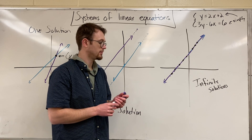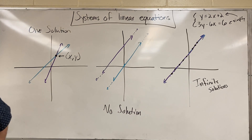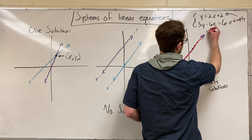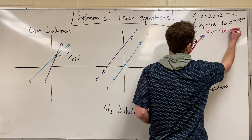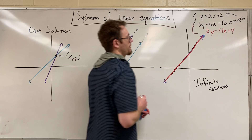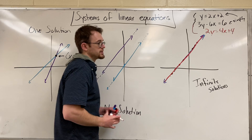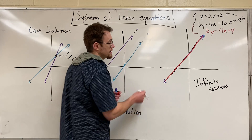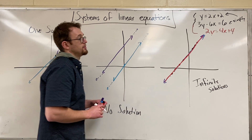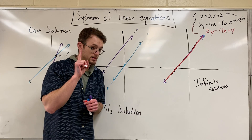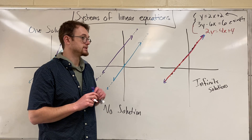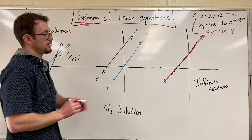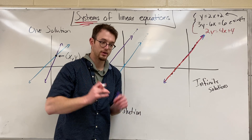If you have a system with all lines overlapping — let's add a third line, like 2y equals 4x plus 4 — it's still infinite solutions. It intersects at an infinite amount of spots everywhere. You're only going to see one black line. If it says 'system' and you see one line, that means infinite solutions.